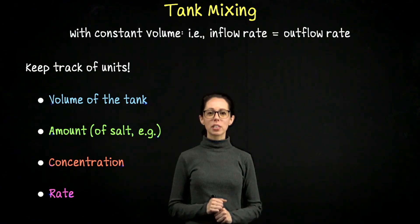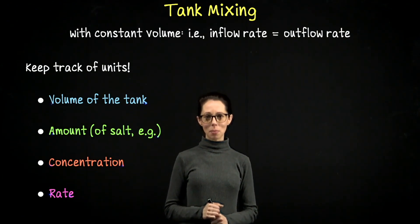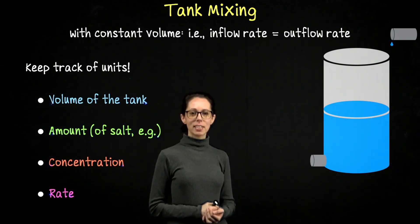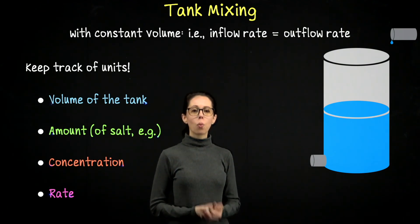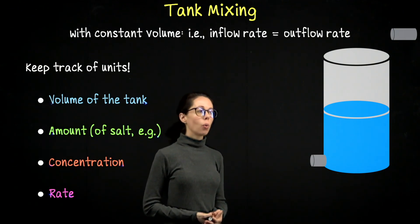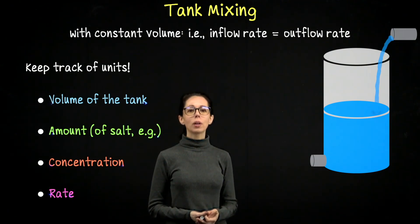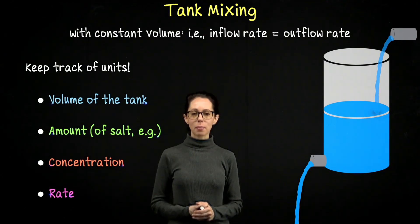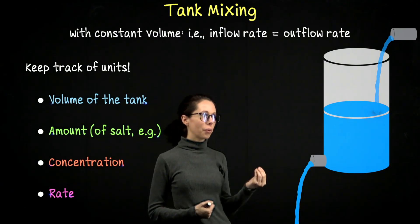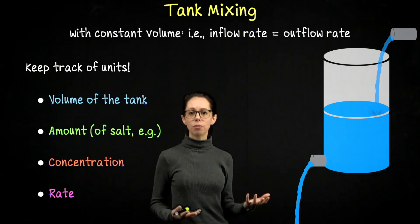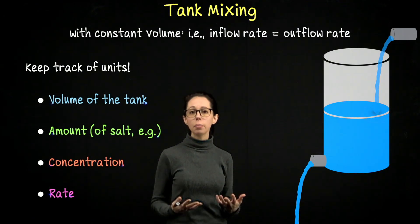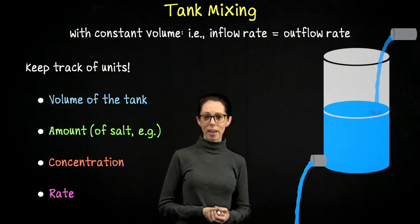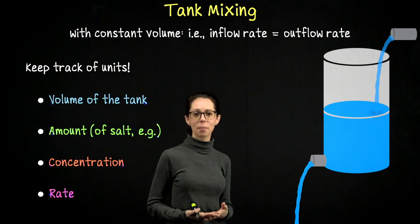Hi everyone. In this lesson, we are going to do examples of tank mixing problems. Imagine that we have a tank containing some kind of fluid. We'll have two taps: one which adds fluid to the tank and one which drains fluid from the tank. In some tank mixing problems the inflow is faster than the outflow so the tank is slowly filling up, while in others we're draining faster so the tank's volume would be decreasing over time.